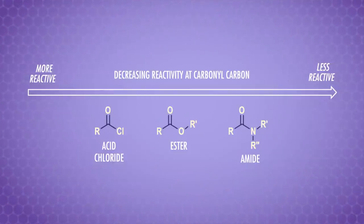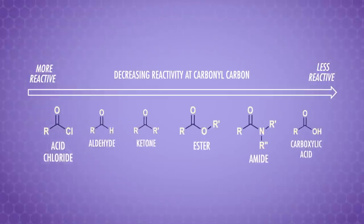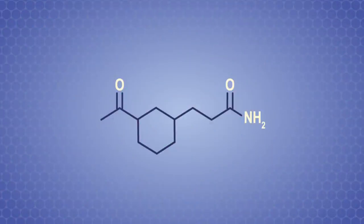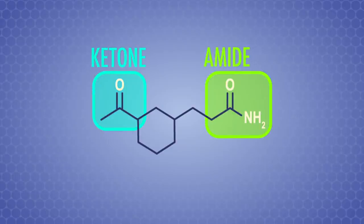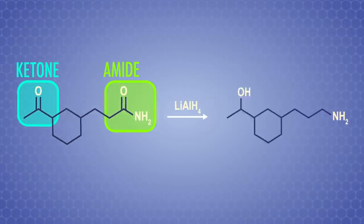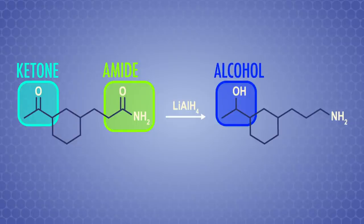We looked at the reactivity of carboxylic acid derivatives in the previous episode. Let's add in the other carbonyl compounds we've encountered to give us the full picture. As an example, this molecule has two carbonyl functional groups – a ketone and an amide. If we use a reducing agent like lithium aluminum hydride, that reactivity comes into play. The ketone gets reduced first into an alcohol, and then the amide gets reduced into an amine.